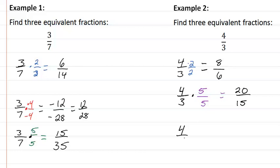Take 4/3, multiply it by 8, and we'll get 32/24. These are all equivalent to 4/3.